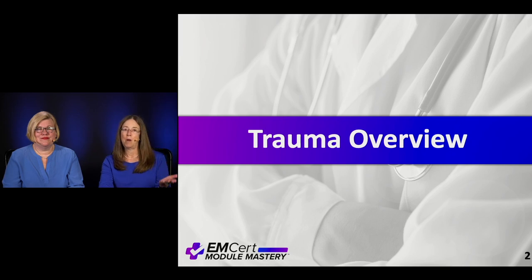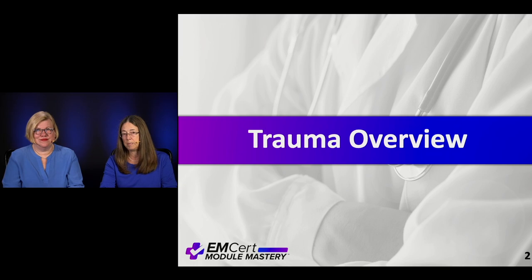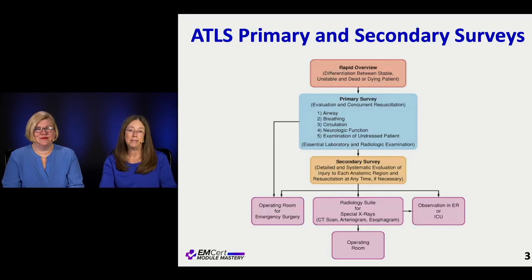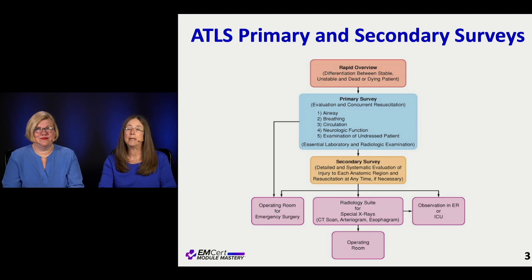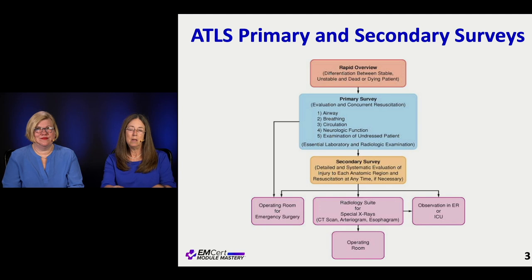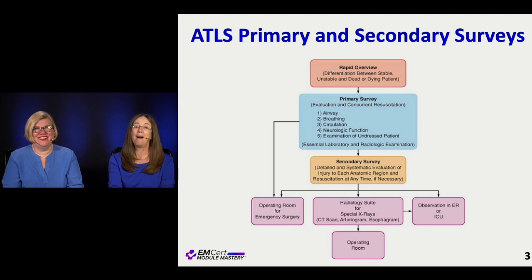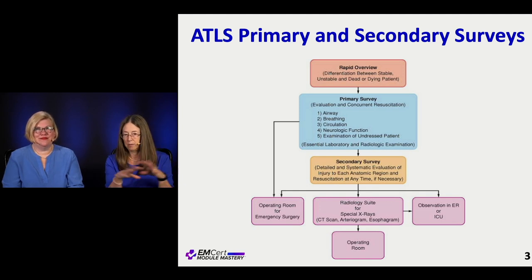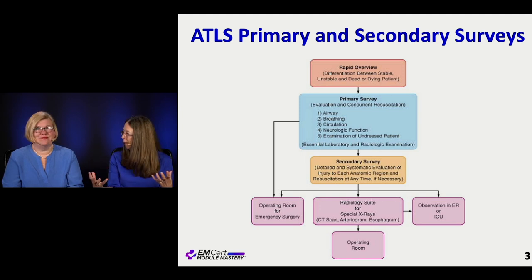We're going to start with just an overview of trauma — the general things that have to do with trauma. Trauma has been sort of codified and made algorithmic by ATLS. ATLS evaluates a patient in two layers. The first thing is a super rapid overview: basically, are they dead or not? Basically stable, unstable, or dead — those are the major initial three categories. Then you do your primary survey.